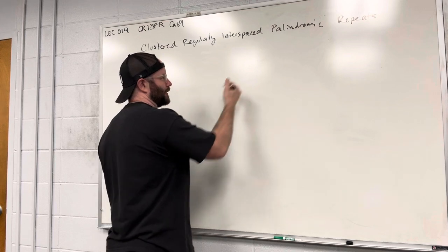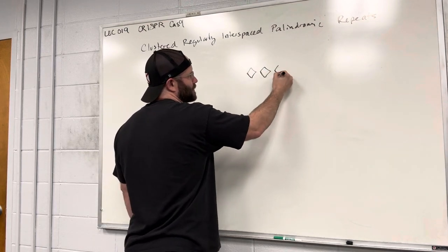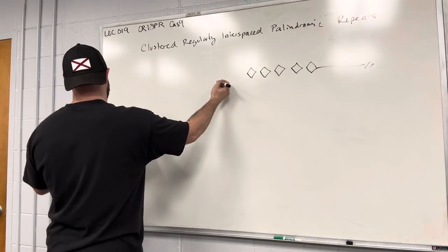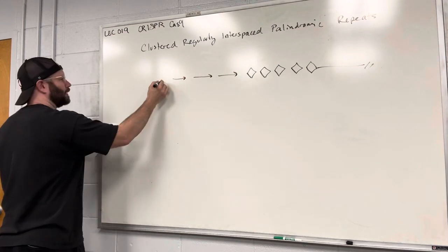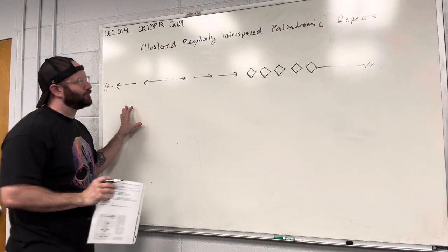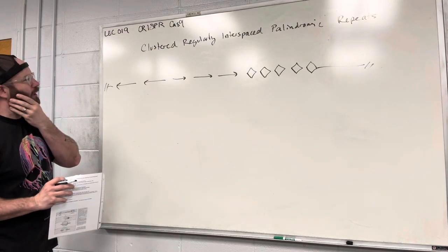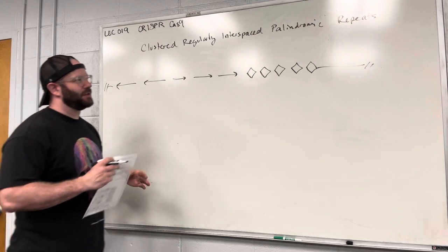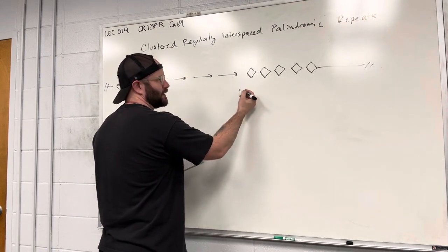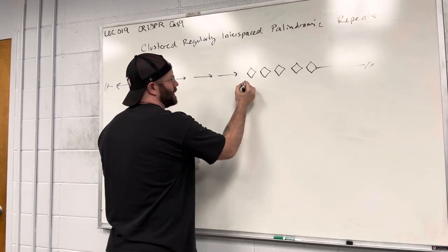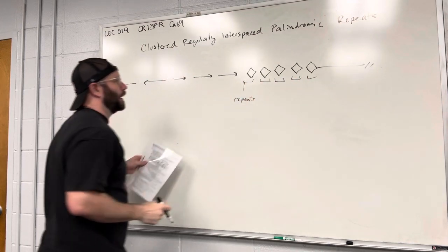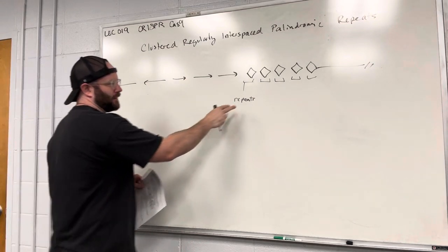So originally when CRISPR was discovered, there was a researcher named Francisco Mojica. He was looking at genomes of bacteria and he found these repeats — sections of repeating sequences within the genome.